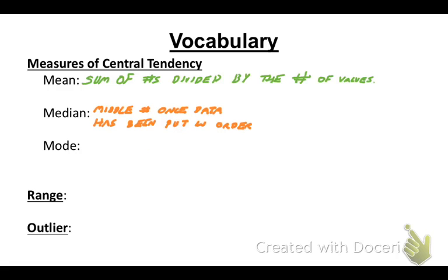Now, one more piece of central tendency or part of the measures of central tendency is what's known as a mode. And a mode is defined as the number, and it could be more than one, but it's a number appearing the most often.